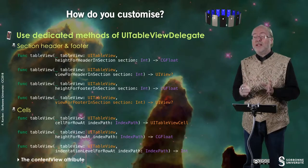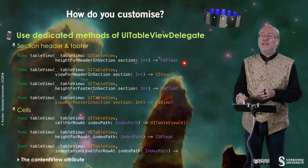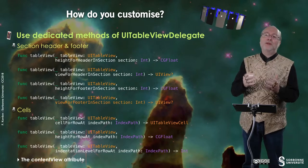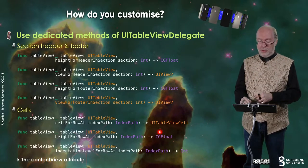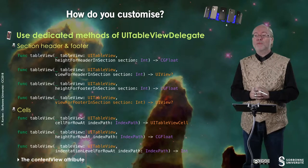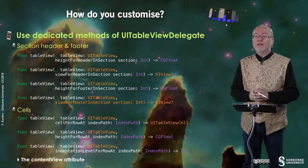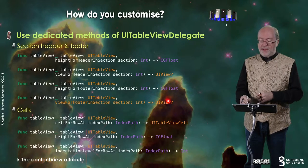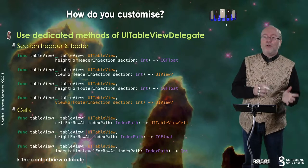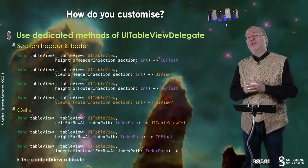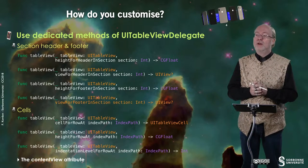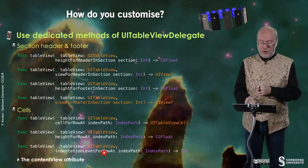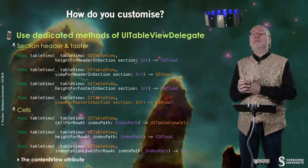In both cases, you see you have methods that deal with the height of a header, a footer, or a TableView cell. Then you have the possibility to provide views for the header, for the footer, or for a TableView cell. You may also set up some indentation level.